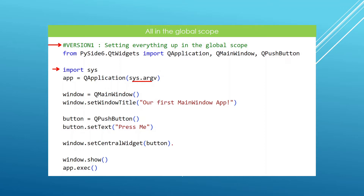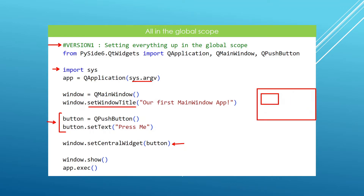Another special thing about this kind of window is that we can give it a central widget, and that's what we want to do here to be able to use buttons. We have the window, we give it a title using the set window title method, and we set up a button meant to live inside this window. The button has text 'Press Me' and sits within the window. After that we show the window and start the event loop.